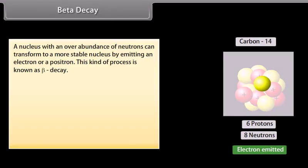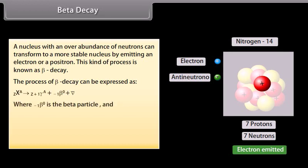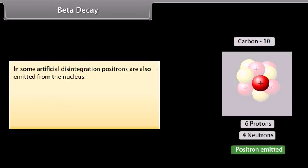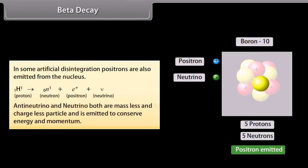Beta decay. A nucleus with an overabundance of neutrons can transform to a most stable nucleus by emitting an electron or a positron. This kind of process is known as beta decay. This process of beta decay can be expressed as... where is the beta particle and is the anti-neutrino. For example... In some artificial disintegration positrons are also emitted from the nucleus. Anti-neutrino and neutrino both are massless and chargeless particle and is emitted to conserve energy and momentum.